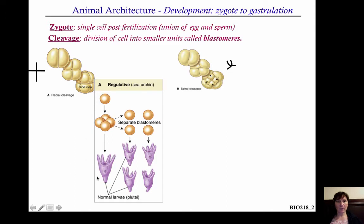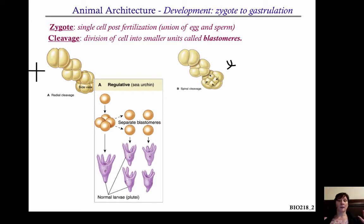What they're showing you here are larvae from a sea urchin — these are what are called Plutii larvae — and what it's trying to indicate is that each of these blastomeres, if you were to separate them off, they would form normal, fully functional larvae that would then become normal adults.